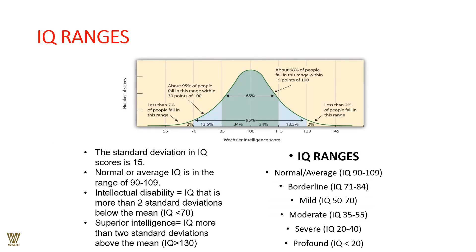Regarding IQ ranges: the standard deviation is 15, and the average range is approximately 90 to 109. IQ below 70 or above 130 marks the extremes. Borderline IQ is 71–81; mild intellectual disability is 50–70; moderate is 35–55; severe is 20–40; and profound intellectual disability is below 20.